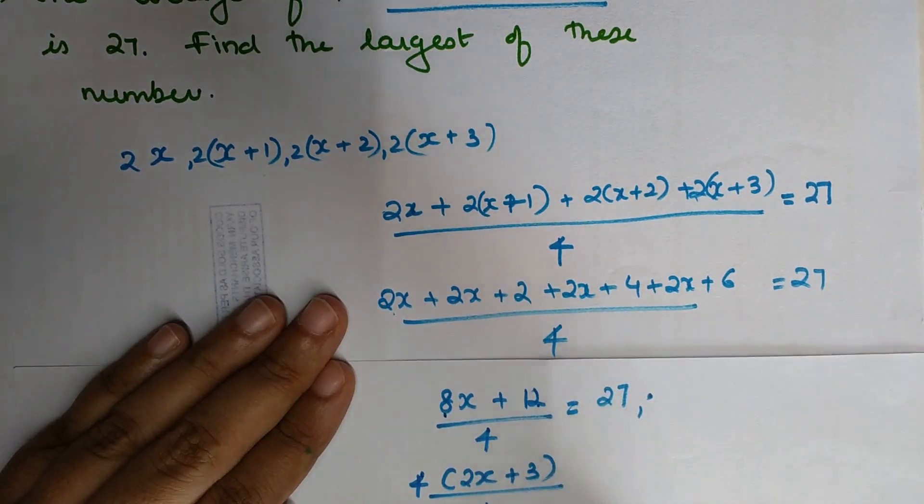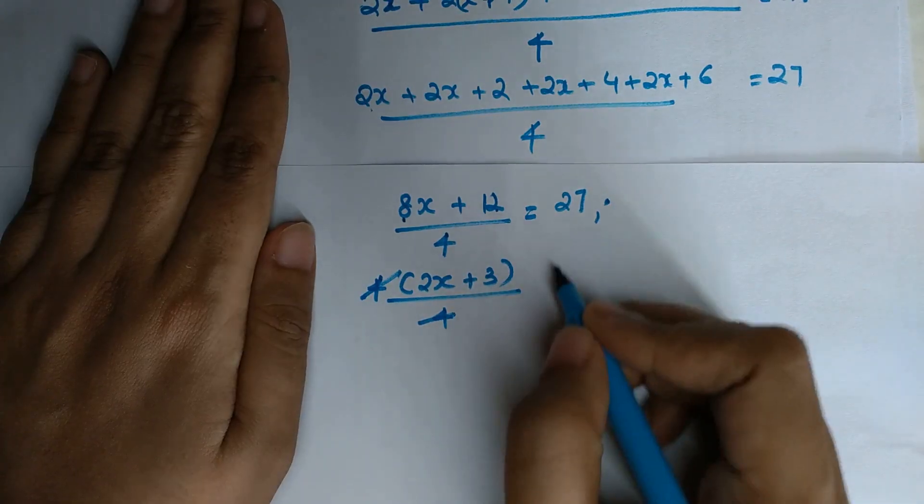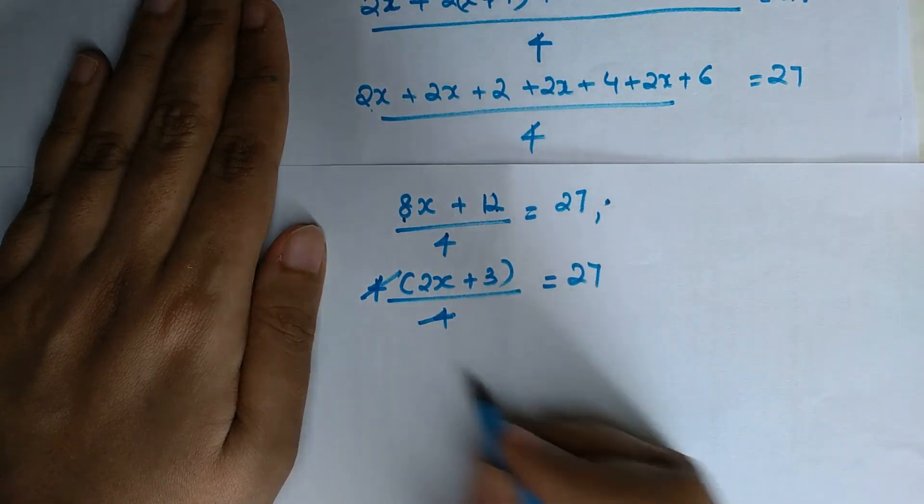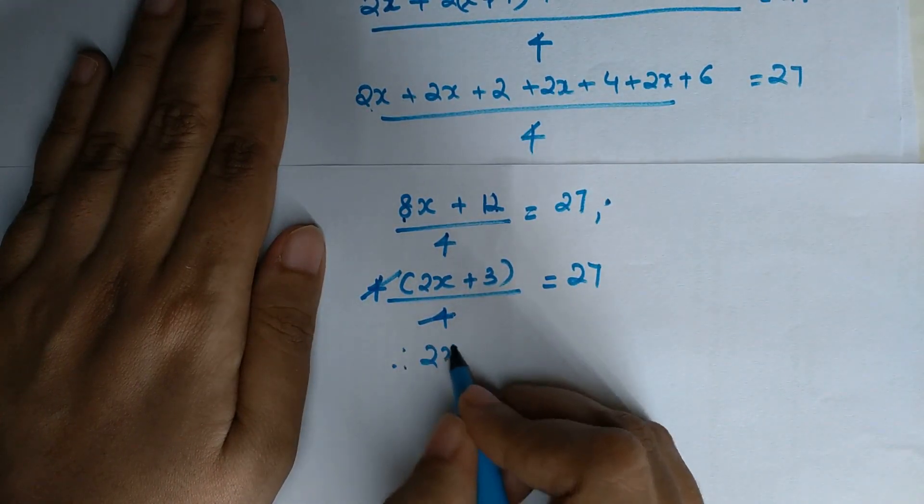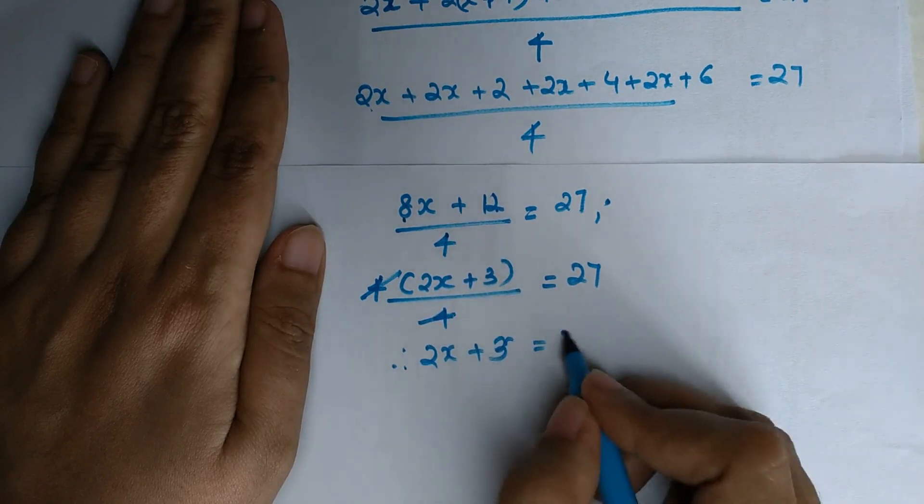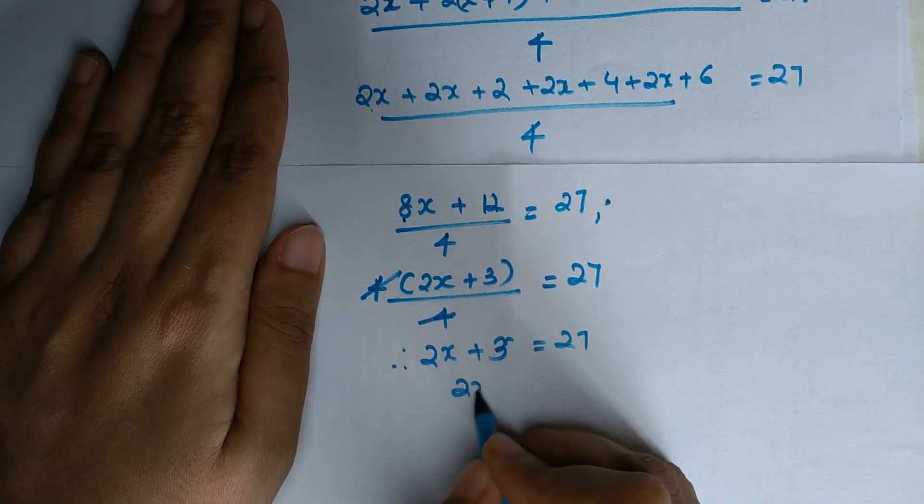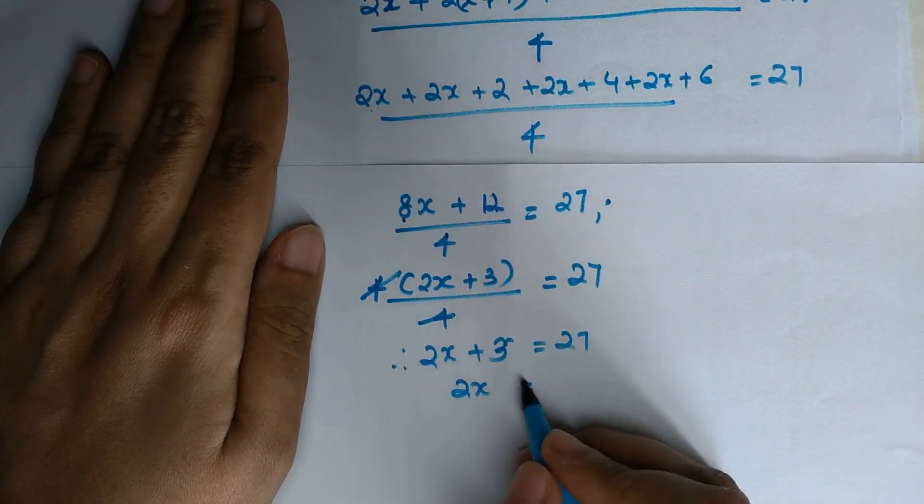Therefore, 2x+3 = 27. So 2x equals 27 minus 3, which is 24. So x equals 12.